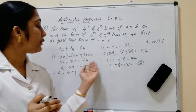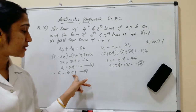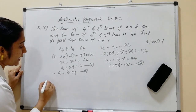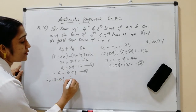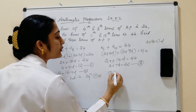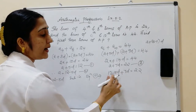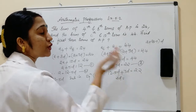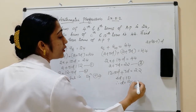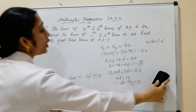Now we solve these linear equations in two variables. Substituting equation number 2 — A equals 12 minus 5D — into equation number 3: 12 minus 5D plus 7D equals 22. That gives 2D equals 22 minus 12, so 2D equals 10, therefore D equals 10 divided by 2, which equals 5. So the common difference D is equal to 5.